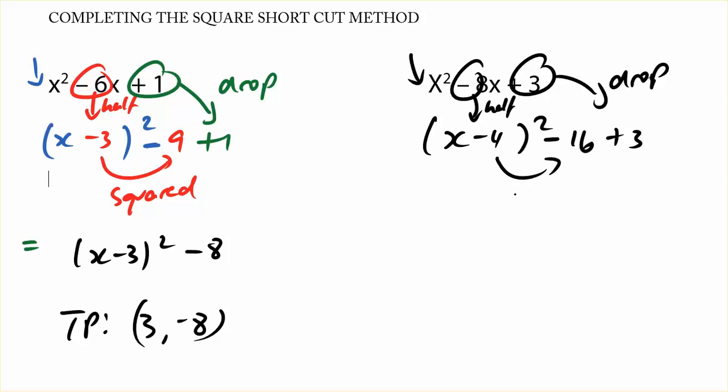So what I did was I squared that term. As a result, we've got x minus 4 squared plus negative 13. And the turning points of my graph, or if this was a graph, would be 4 negative 13.